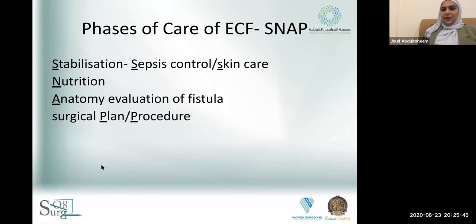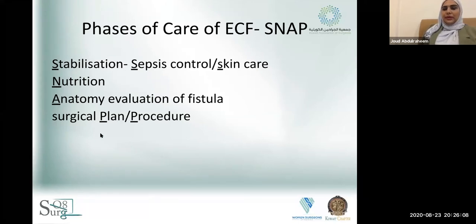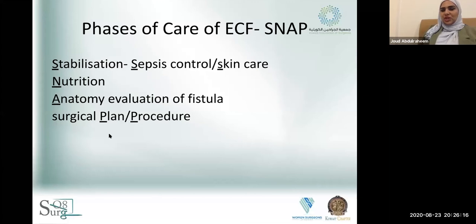To talk about the phases of care of enterocutaneous fistula, when the patient presents with a complaint of fistula, we use the mnemonic SNAP. We first stabilize the patient — control any sepsis, address skin care, and ensure nutrition. Then we evaluate the anatomy of the fistula, which helps us determine which surgery is better and the patient's chances of healing. Finally, we start planning our surgical procedure in case of failure of spontaneous closure.